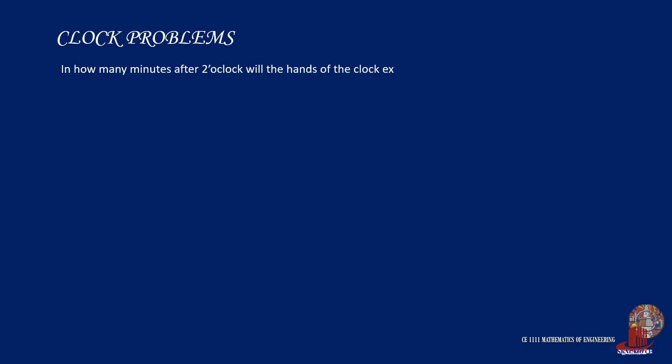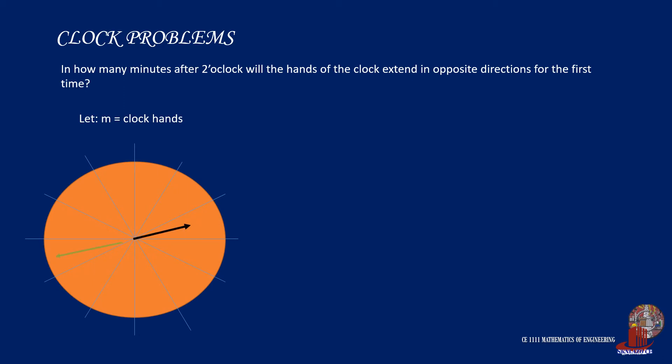The second problem states, how many minutes after 2 o'clock will the hands of the clock extend in opposite directions for the first time? If we continue using the first equation, take note that it is for coincident hands. So to be proper for the problem, we would need to add 30 minutes or half a revolution to keep the hands at 180 degrees inclination.